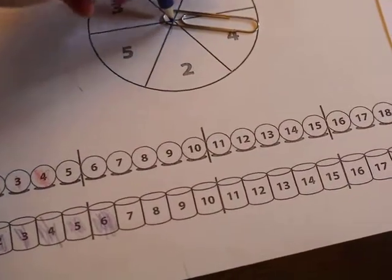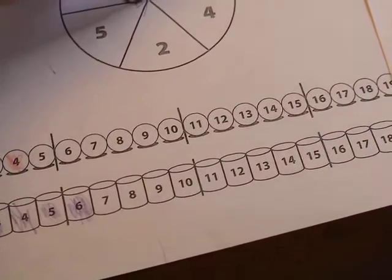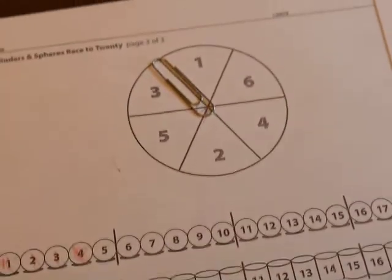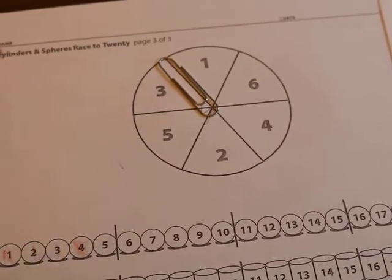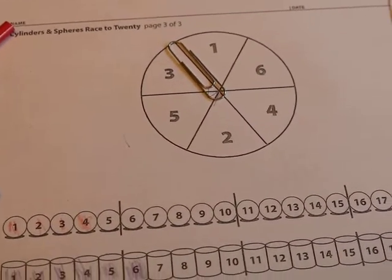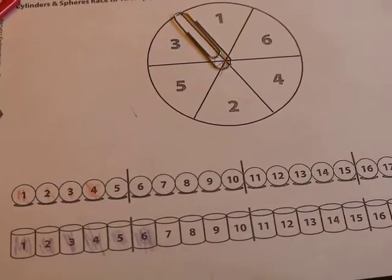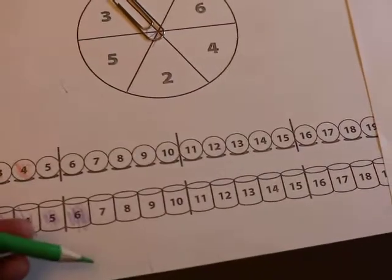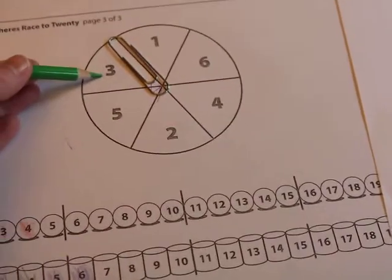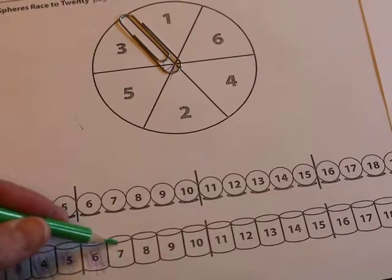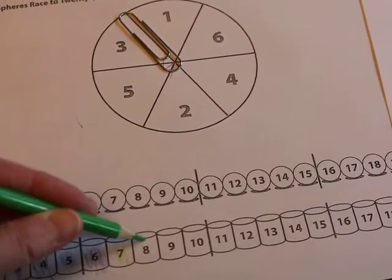Now it'll be back to Mrs. Skinner's turn. Boom. Okay, I spun a three. It's kind of on the line but most of the spinner is in the three so I'm going to call that a three. Now I used this bluish purple the first time, so now I'm going to use green and I'm going to color in three because I spun a three: one, two, three.